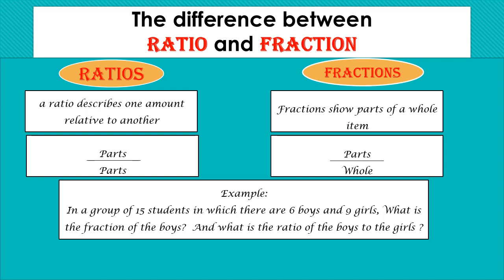Let us look at this example. In a group of 15 students in which there are 6 boys and 9 girls, what is the fraction of the boys? We know that the fraction is parts to the whole thing. So now here we want the fraction of the boys, so the answer will be boys to the whole number. The boys are 6 and the whole students are 15, so the answer will be 6 to 15.